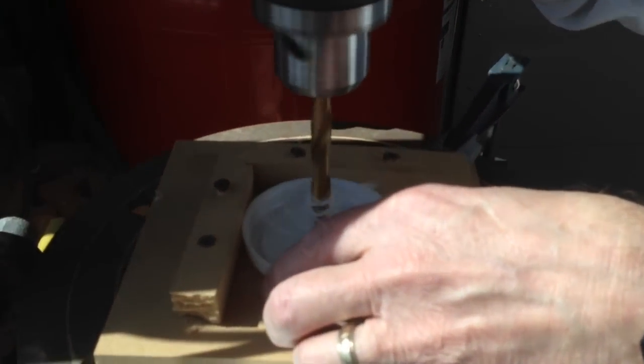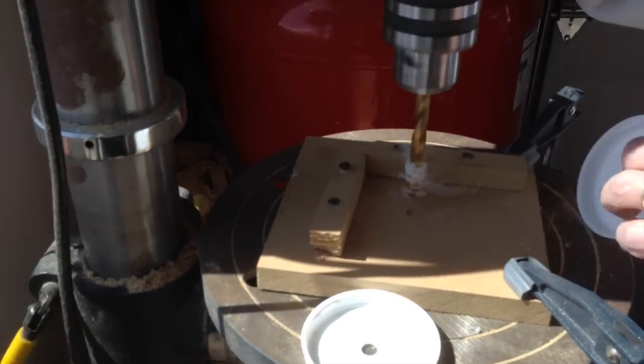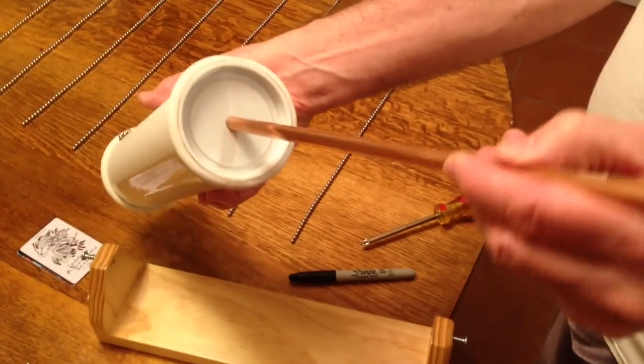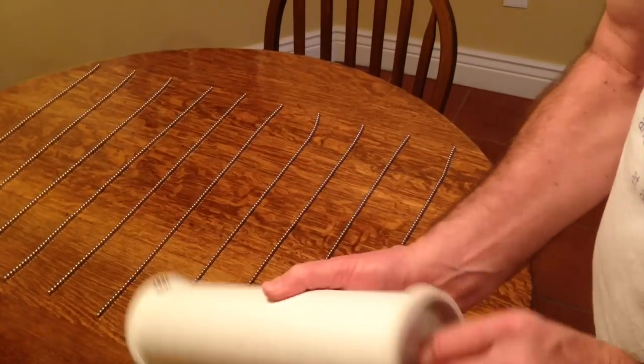Holes of diameter 3 eighths of an inch are drilled in the centers of the plastic end caps, through which a copper rod of length 12 inches and diameter 3 eighths inches passes.